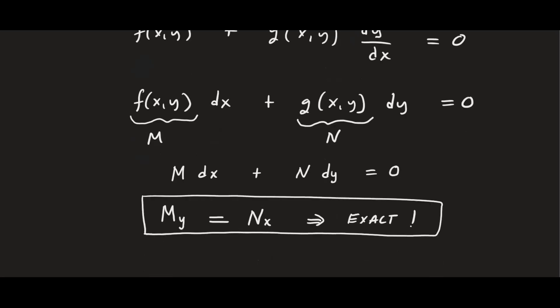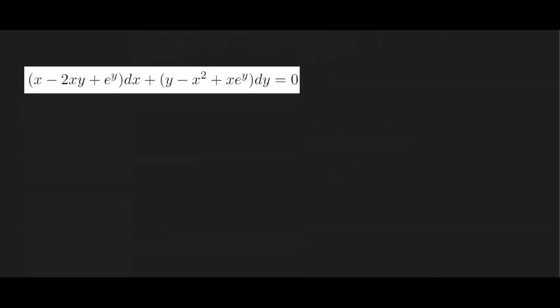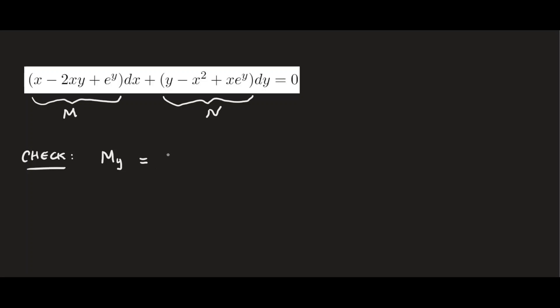Now let's take a look at our first example. We have some function tagged with dx and some function tagged with dy equal to zero — exactly in the form that we want. We're going to label them: call the function tagged with dx as M, and the function tagged with dy as N. Now we check if this is exact by taking the partial derivative of M with respect to y. The derivative of x is zero; for negative 2xy, x is a constant, so we get negative 2x.